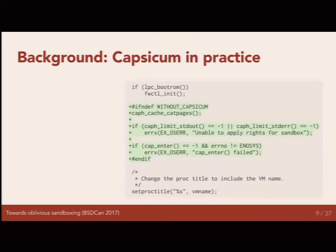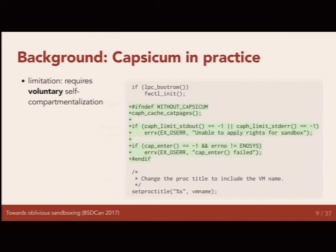This allows us to do certain things, and some applications can be compartmentalized quite easily in a very effective way. When we say an application has been Capsicumized, that means something quite strong because it's a very simple, straightforward policy that's easy to understand. However, there is a real limitation with Capsicum as it stands right now: applications have to compartmentalize themselves. They have to voluntarily give up these rights, prepare themselves to enter capability mode by accessing all the resources they need, and then enter capability mode.